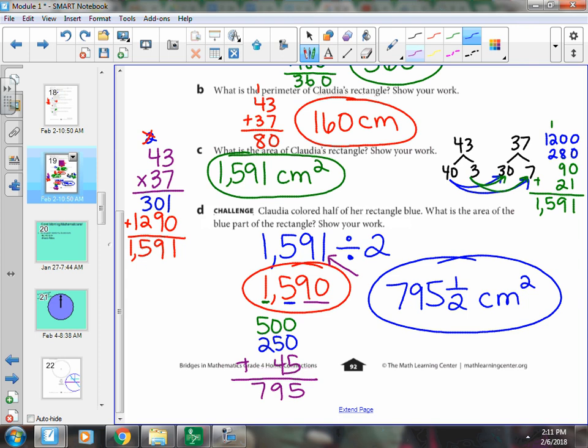And you could double check to make sure that it equals what it's supposed to, 1,591. If I take 795 and a half, maybe I'll write it like that, plus 795 and a half. A half plus a half is a whole.